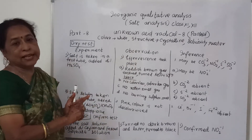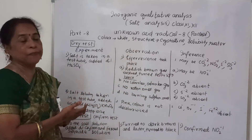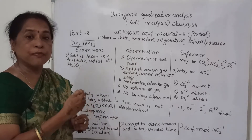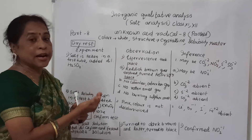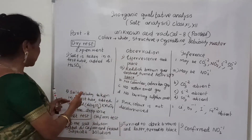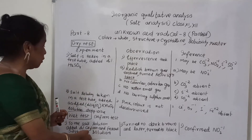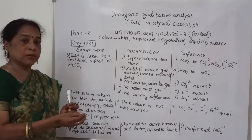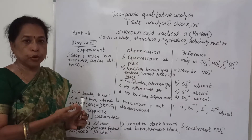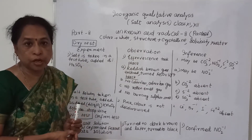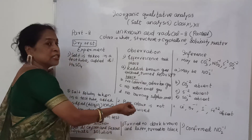Only maybe nitrite — by its reddish-brown gas turning ferrous sulfate solution black. But since bromide also gives a reddish-brown gas, I should check another test. I took salt solution in a test tube and added dilute sulfuric acid and the potassium permanganate solution. The pink color is not discharged.